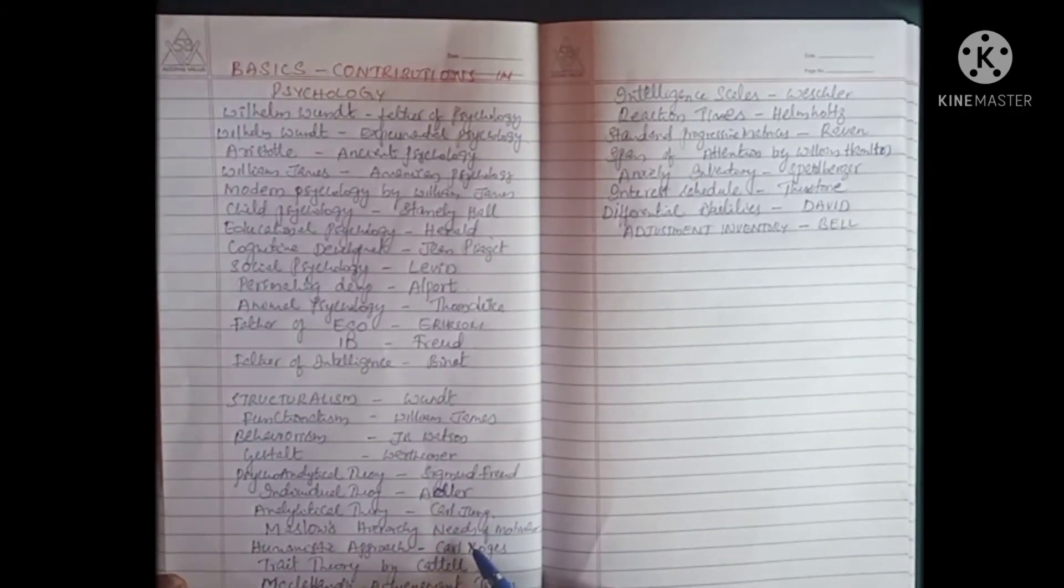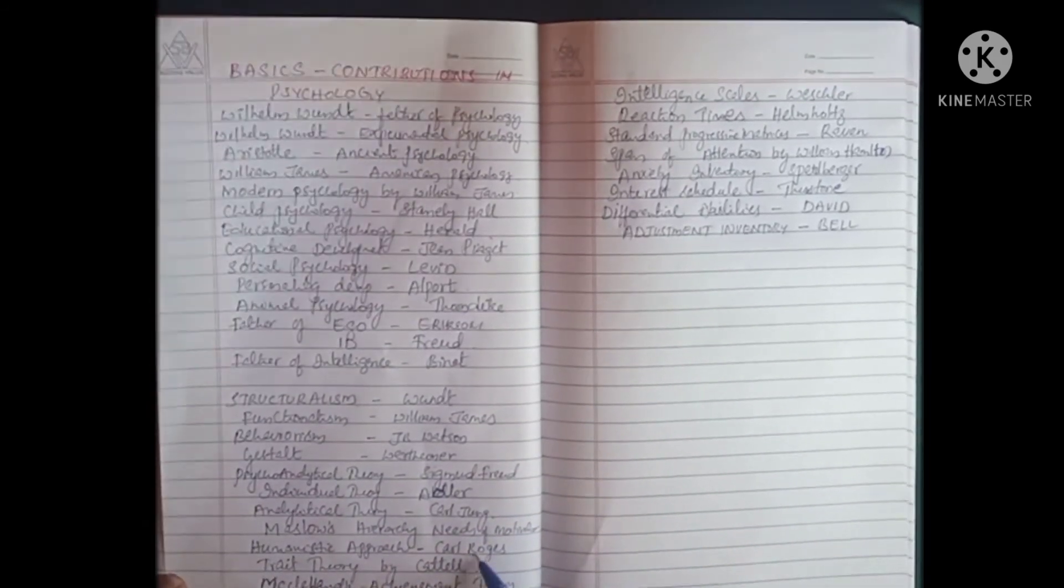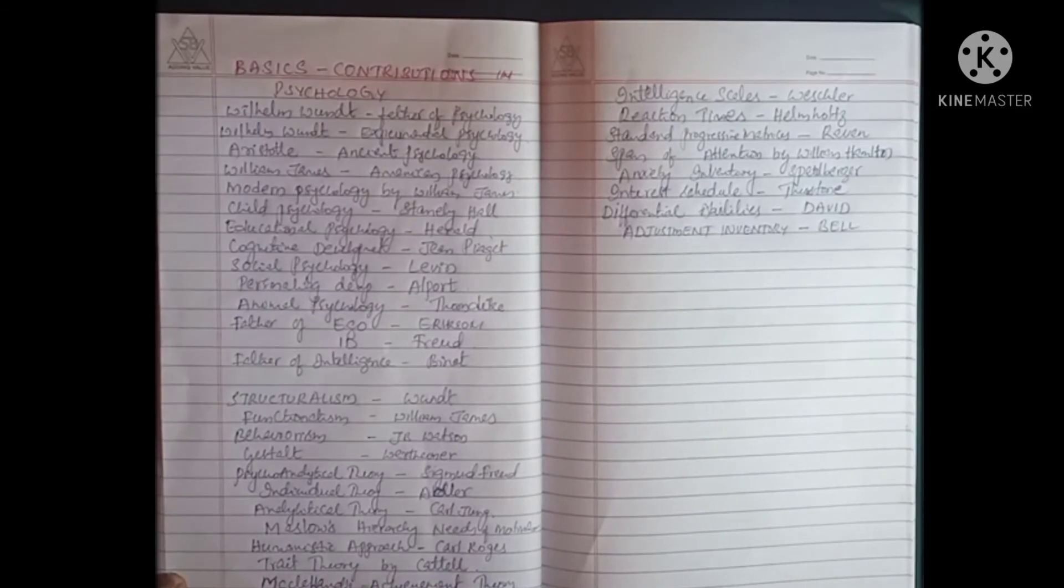Maslow's hierarchy theory, i.e. needs of motivation by Maslow. Humanistic approach by Carl Rogers. Trait theory by Cattell. McClelland's achievement theory.